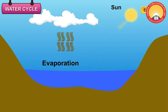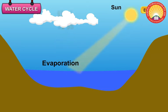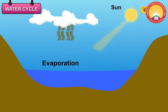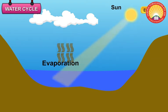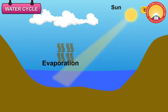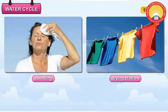Evaporation: Due to the heat of the sun, water changes into water vapour and moves up. This is called evaporation. Water evaporates from all types of water bodies, whether big or small. Sweating and drying of clothes are examples of evaporation.